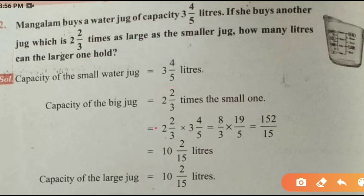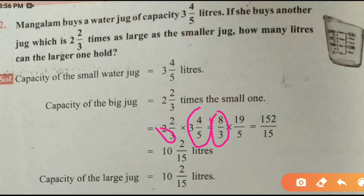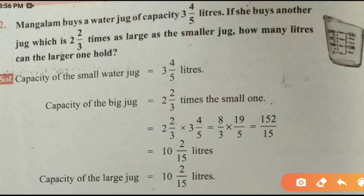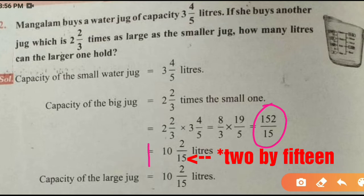These fractions are mixed fractions, so change them to improper fractions. 2 and 2 by 3 changes to 8 by 3, and 3 and 4 by 5 changes to 19 by 5. Then simplify 8 by 3 into 19 by 5: 8 into 19 is 152, and 3 into 5 is 15. Changing from improper fraction to mixed fraction gives 10 and 2 by 5 liters. So the capacity of the larger jug is 10 and 2 by 5 liters.